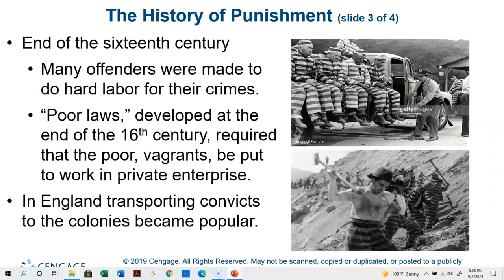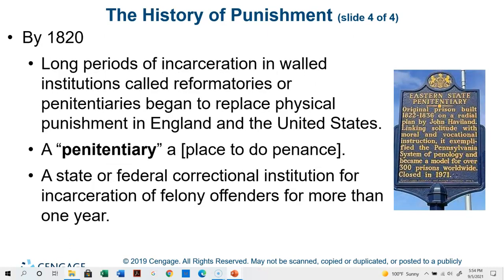At the end of the 16th century, many offenders were made to do hard labor for their crimes. Poor laws, developed at the end of the 16th century, required that the poor, vagrants, etc., be put to work in private enterprise. In England, transporting convicts to the colonies became very popular. By 1820, long periods of incarceration in walled institutions called reformatories or penitentiaries began to replace physical punishment in England and even in the United States.